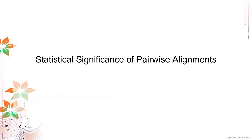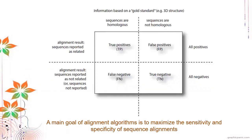How do we determine statistical significance of alignment scores? We have true positives, false positives, false negatives, and true negatives. If sequences are homologous and the alignment reports them as related, that's a true positive. If homologous sequences are reported as not related, that's a false negative.